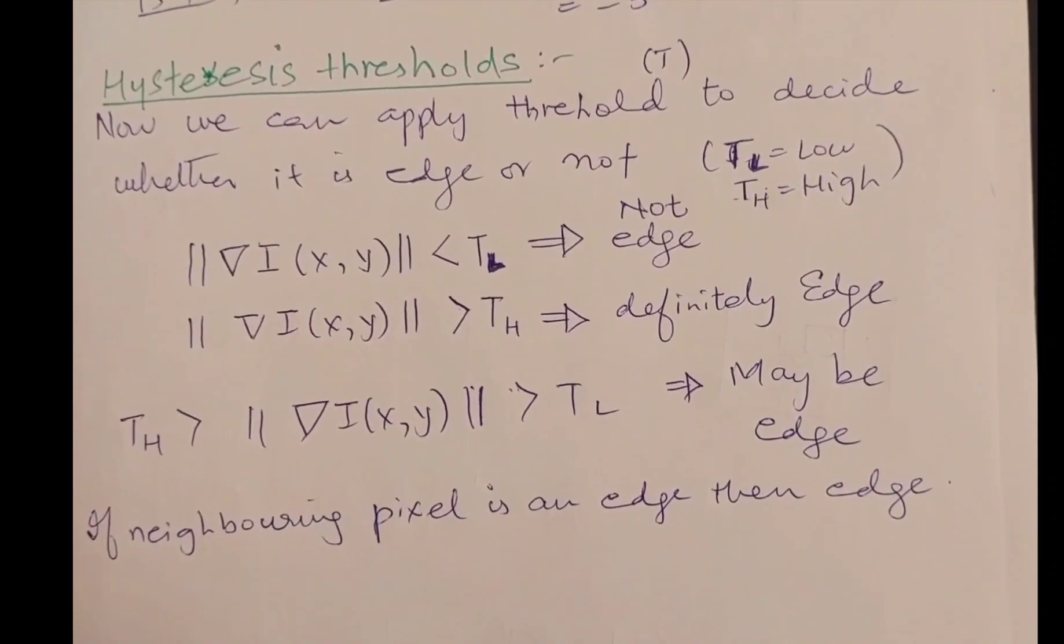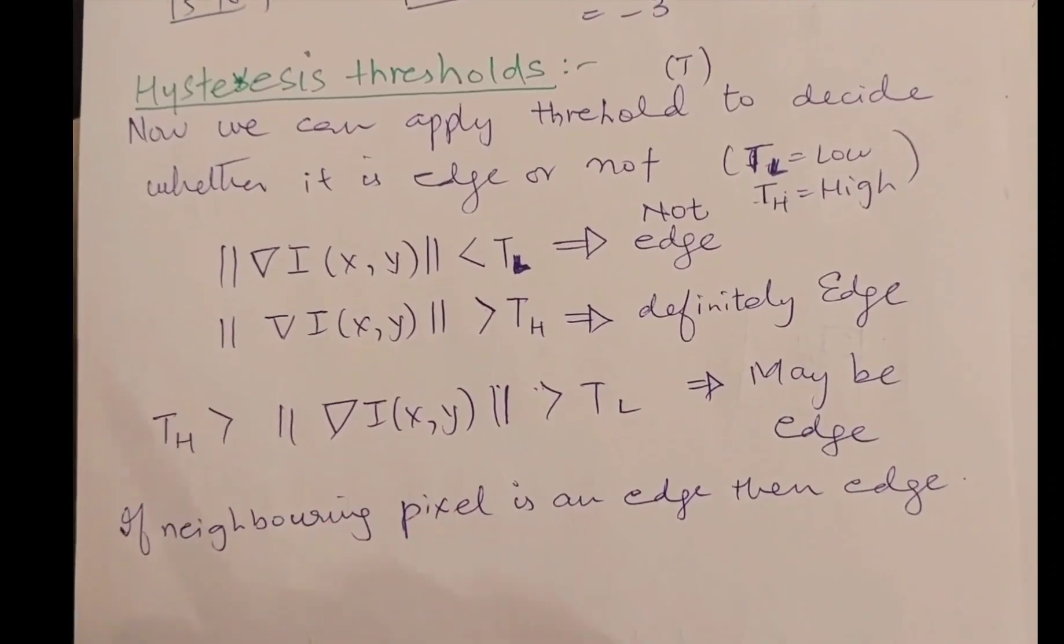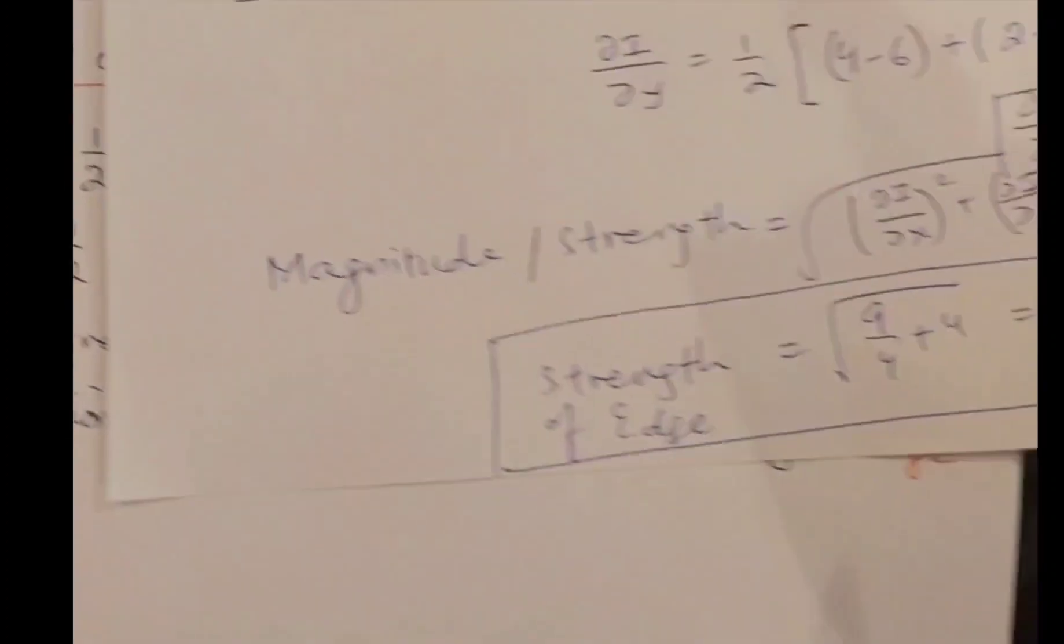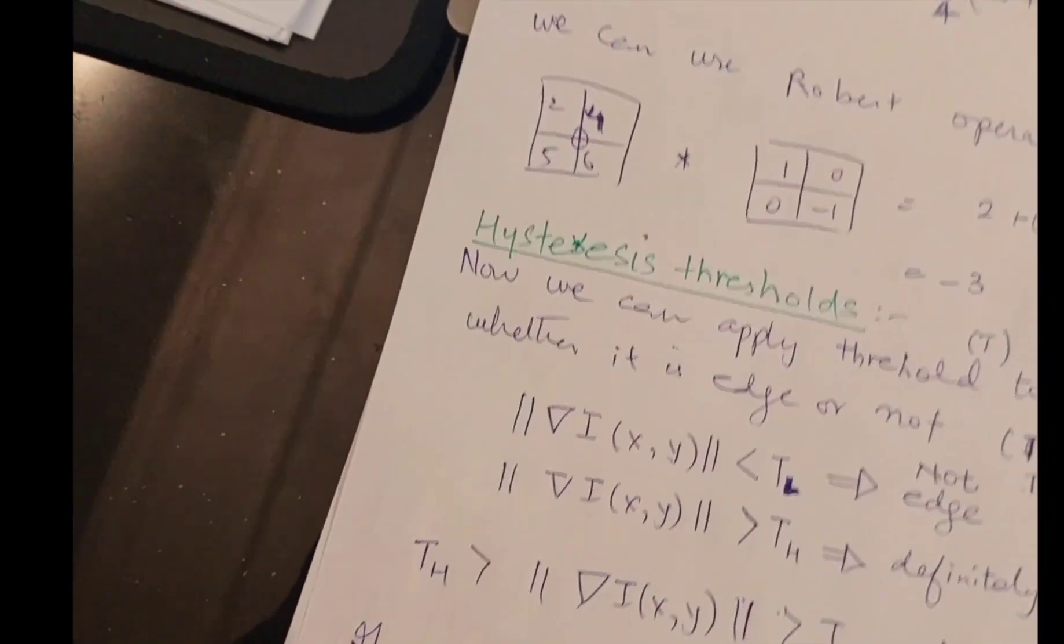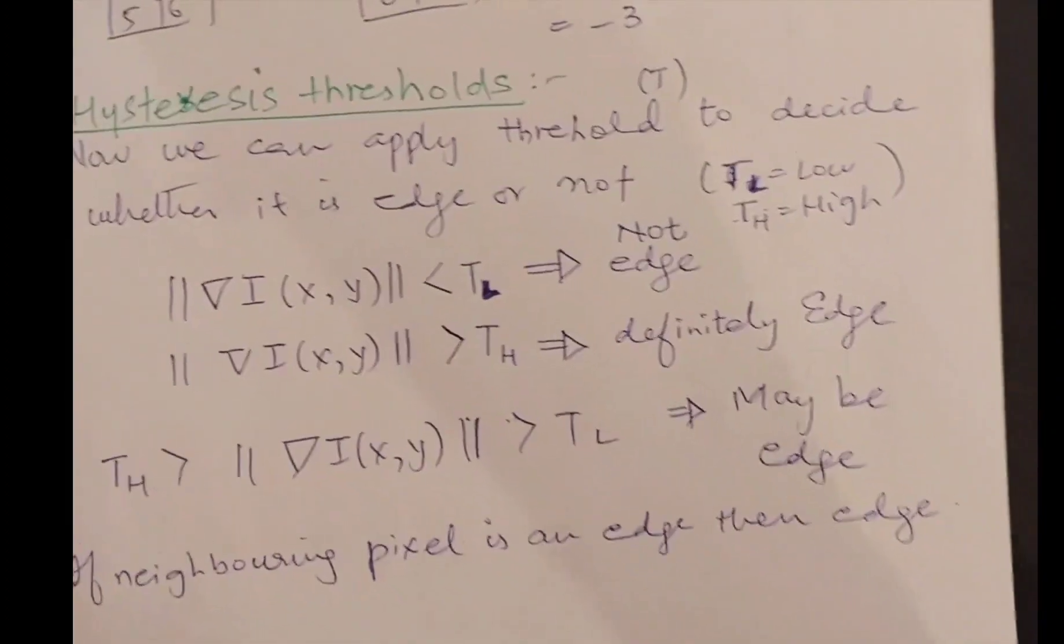Once we have found out the value of that magnitude of the edge, or the value that we calculated in the last step like 2.5, then if we have to decide whether it's an edge or not, we will make this decision on the basis of hysteresis thresholding.